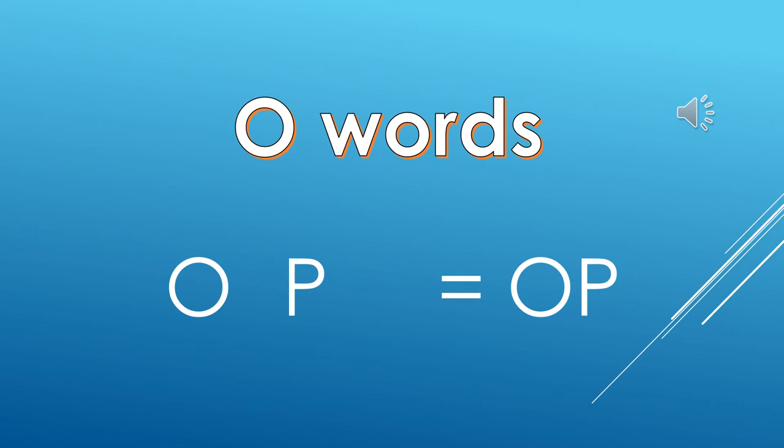So now we will be doing the O words. And once we do the O words, we are going to do which letter — O, P. The sound of O is O. The sound of P is P. And together it is O, P, Op. Now we will see a few words with Op.